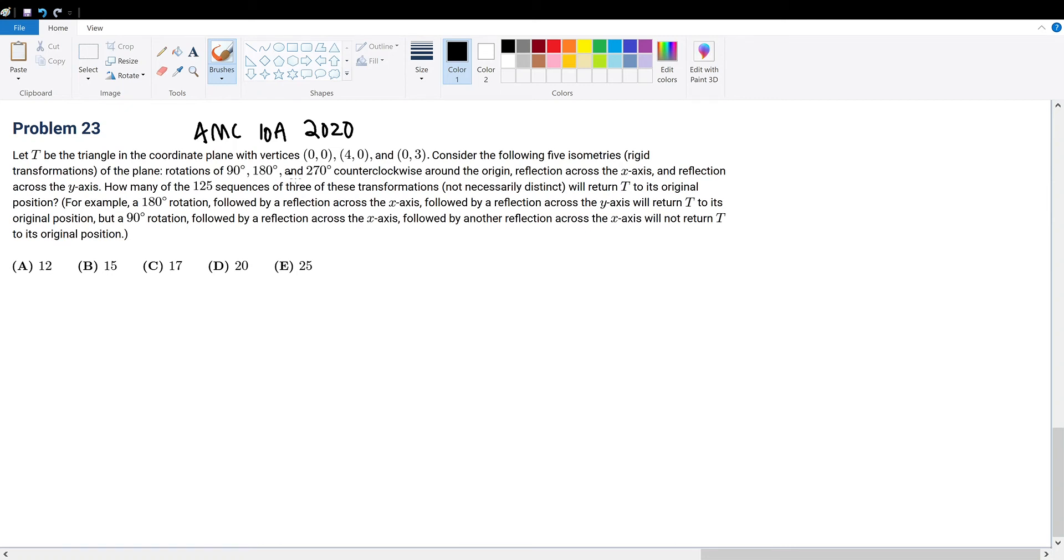AMC 10 in 2020 problem 23. Let T be the triangle in the coordinate plane with vertices (0,0), (4,0), and (0,3). Consider the following five isometries: rotations of 90, 180, and 270 degrees counterclockwise around the origin, reflection across the x-axis, and reflection across the y-axis.